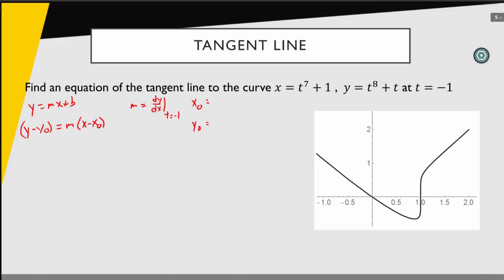So x sub-naught is going to be x of negative 1, y sub-naught is going to be y of negative 1. We're going to plug in that t value to find some starting point that's on our curve. We can do that right away. If this is x of t, then x of negative 1 is going to be,